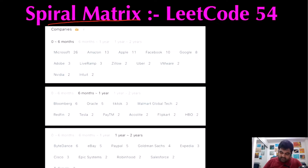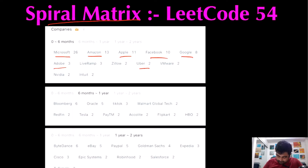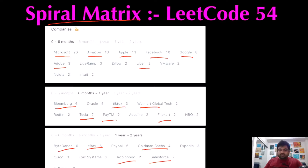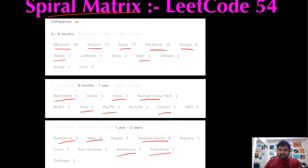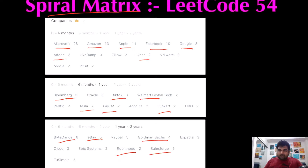We are going to do the Spiral Matrix LeetCode problem. This problem has been asked by tons of my favorite companies like Microsoft, Amazon, Apple, Facebook, Google, Adobe, Uber, Bloomberg, TikTok, Walmart, Tesla, Paytm, Flipkart, ByteDance, eBay, Goldman Sachs, Robinhood, and Salesforce. So you can imagine this problem has been really popular at top-tier tech companies.